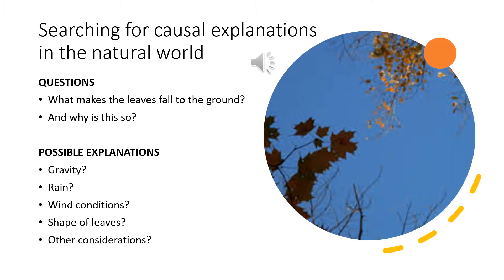Before moving to the critical realist research methodology and its explanations, I would like you to experiment with the critical realist approach by considering the following situation. Imagine it is a cold, rainy and windy day of autumn and from your window you observe leaves falling to the ground. While watching them, you consider what causes actual leaves to fall in a particular direction to the ground. What causal explanations would you give to describe the situation? Would it be gravity, or the rain, or the wind, or the shape of the leaves, or other considerations?